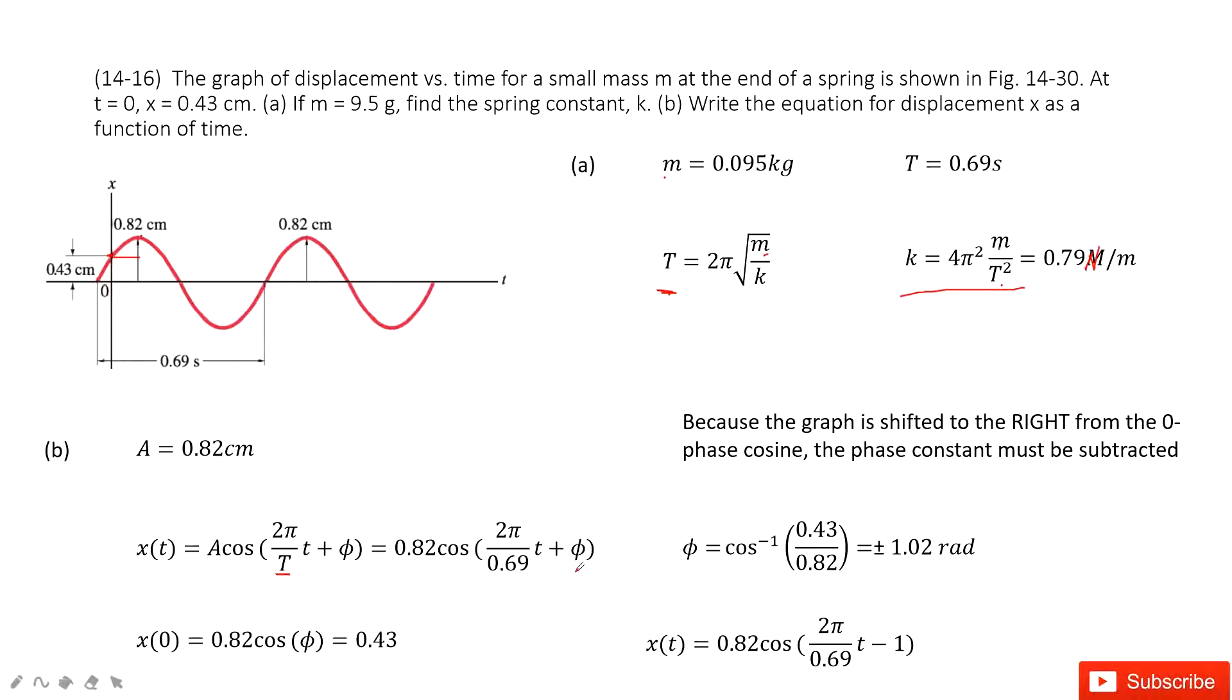So the next step, we need to find φ, the phase constant. Now it tells us that at t equals zero, this term becomes zero, so this term disappears. We just have 0.82 cosine φ equals 0.43. Agreed?